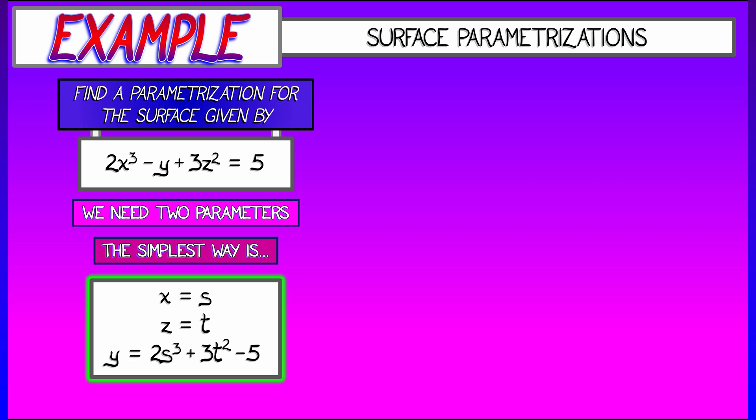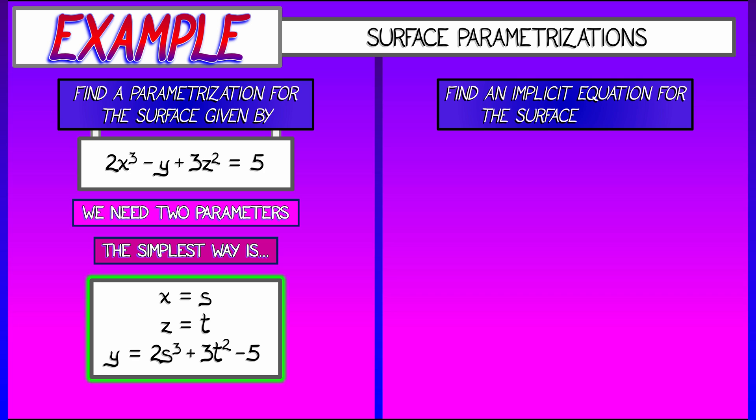That's my parameterization right there. Now, that's not always going to work, but this implicit equation was simple enough that we could manipulate it and get some very simple parameters in there. Here's another problem.